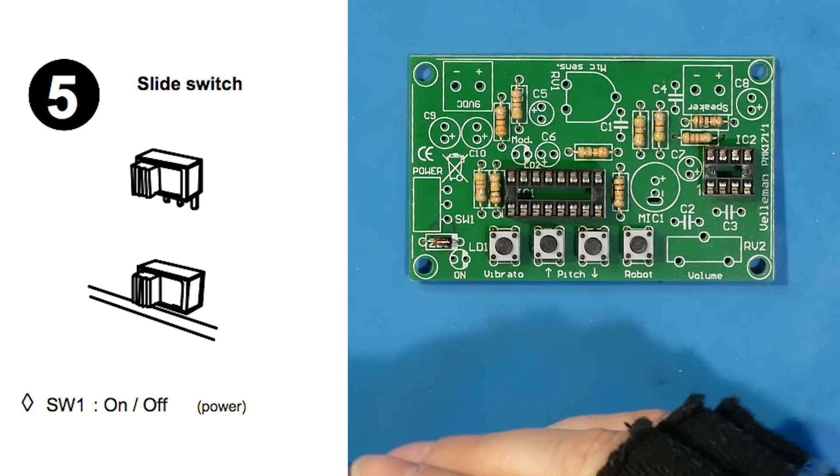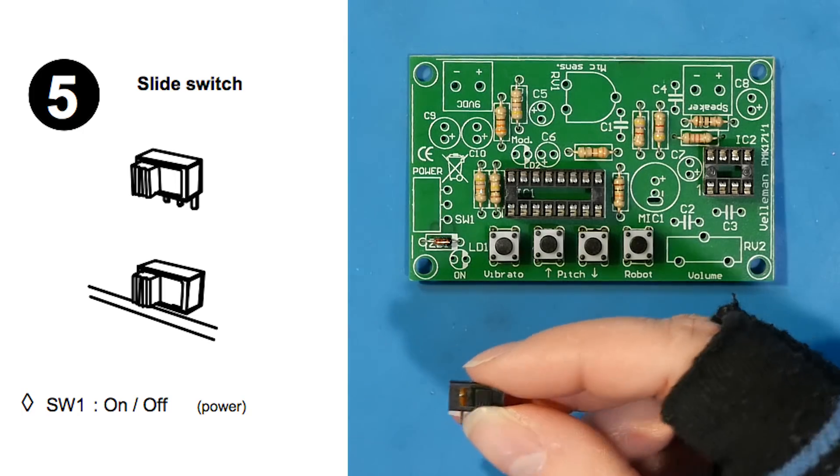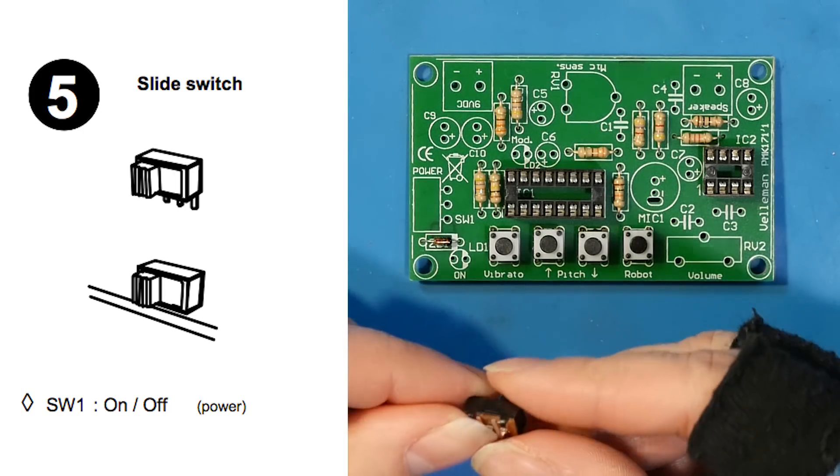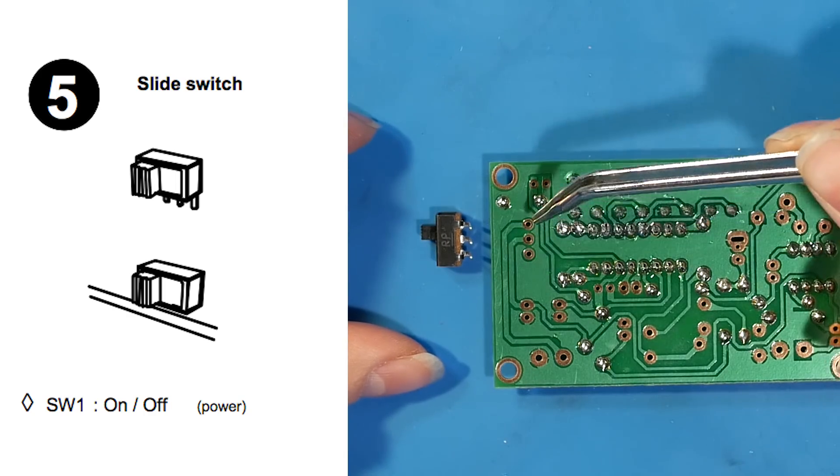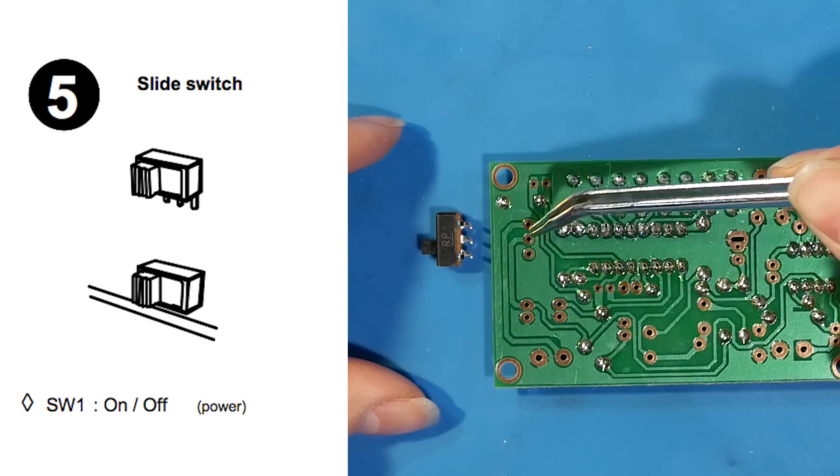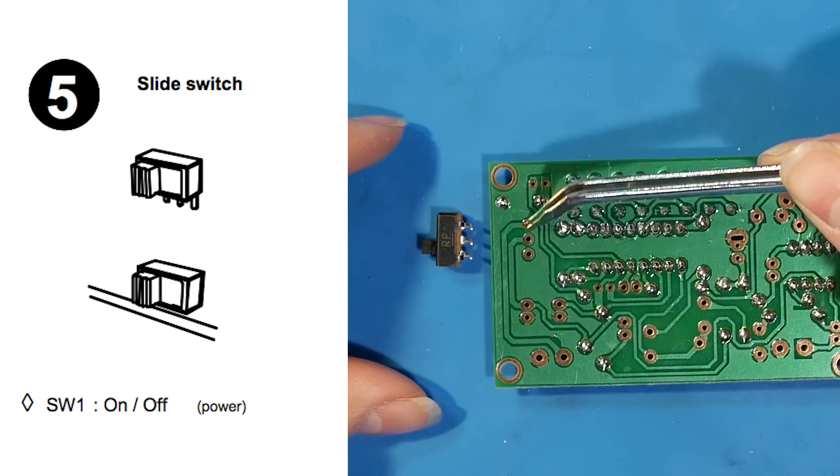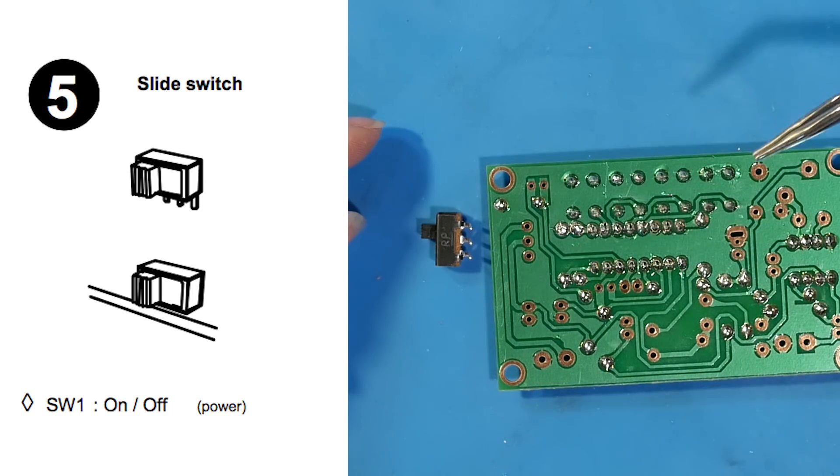In step five, we place the power switch. Now, there's no circuit symbol on the instructions, but we know that this is a single-pole, double-throw, on-off slide switch. Check out the traces. Remember, flipped in the opposite direction, it connects the two opposite pins. So, flipped this way, these two pins will be connected, and flipped this way, these two pins would be connected, so no connection is made.